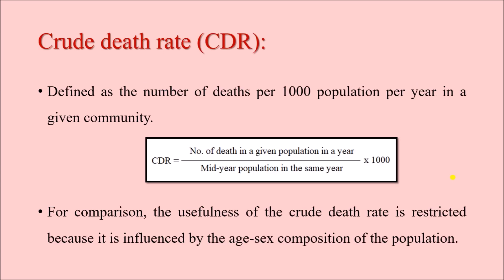The first one is the crude death rate, which is defined as the number of deaths per 1000 population per year in a given community or country. The formula is: number of deaths in a given population in a year divided by the mid-year population in the same population in the same year, multiplied by 1000.